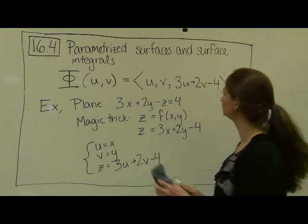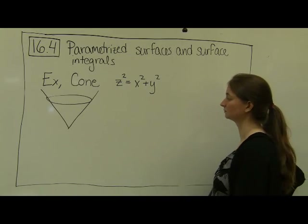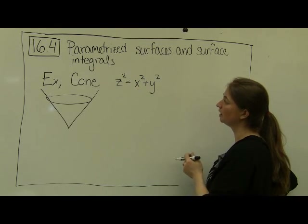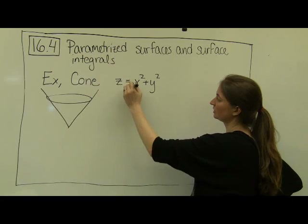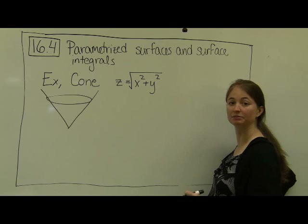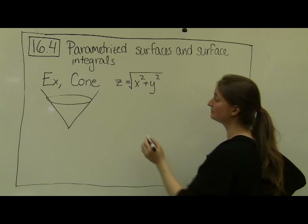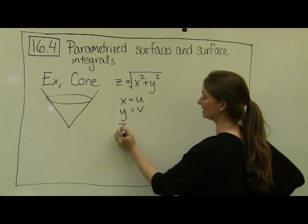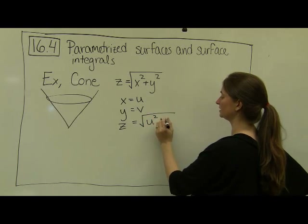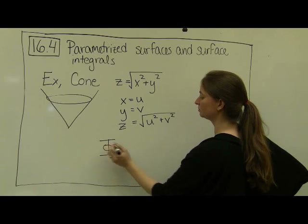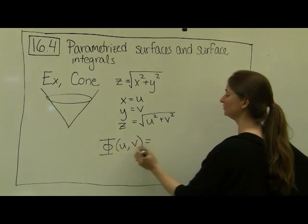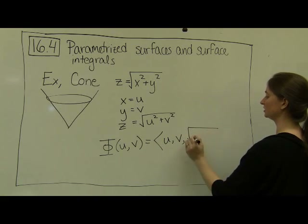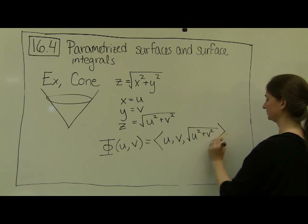For our next example, let's consider the cone. We have z² = x² + y², but taking only the positive part: z = √(x² + y²). Using the same magic trick, let x = u and y = v, so z = √(u² + v²). Our parametrization is Phi(u, v) = (u, v, √(u² + v²)).